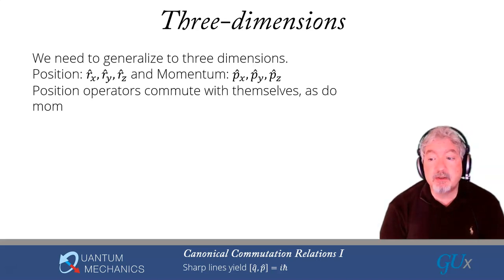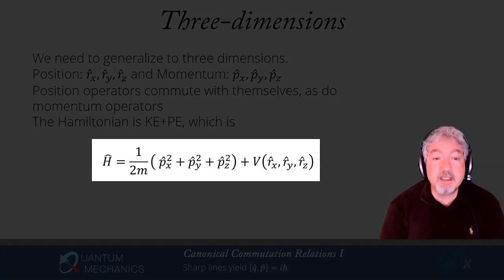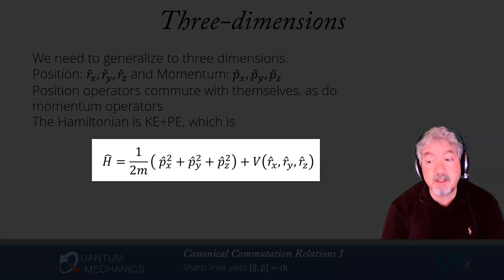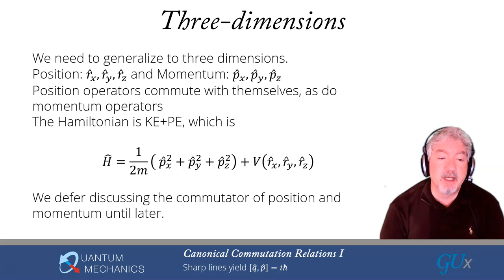The position operators are going to commute with themselves, as do the momentum operators commute with themselves. You might ask why. It's because we can measure both of those independently of one another. And we're going to talk a little bit more about that in just a moment. The Hamiltonian is given by the kinetic energy plus the potential energy. So it's 1 over 2m, p hat x squared plus p hat y squared plus p hat z squared. Those are operators. And then the potential energy, I have to replace all the position coordinates with their position operators. But because the position operators commute with themselves, there's no issue with ambiguities in terms of ordering. It's all completely well-defined. We're going to defer the discussion about the commutator of position and momentum until a bit later. And that's really what the conclusion of this lecture at the end of part two is going to be.